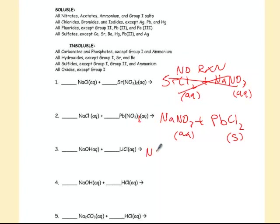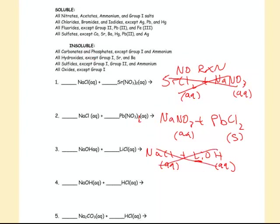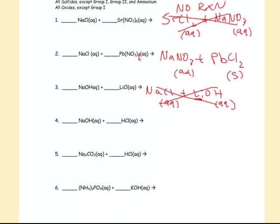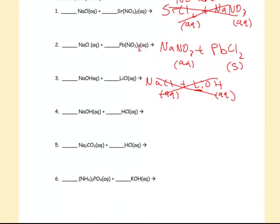The next one is NaCl plus LiOH. NaCl gives a chloride product — aqueous. LiOH is a group 1 hydroxide. All hydroxides are insoluble except group 1, so this is aqueous as well. Both products are aqueous — no reaction.